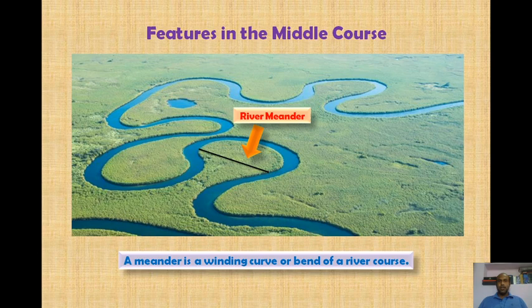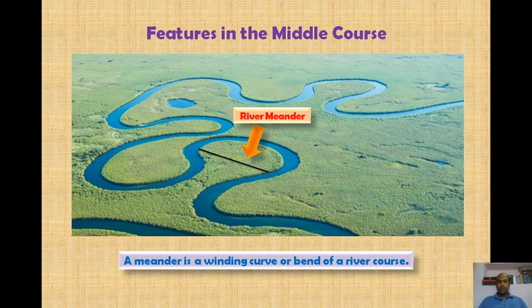In the middle course, the river flows through a winding curve or bend. We can see winding curves or bends of a river course, which are known as river meanders.